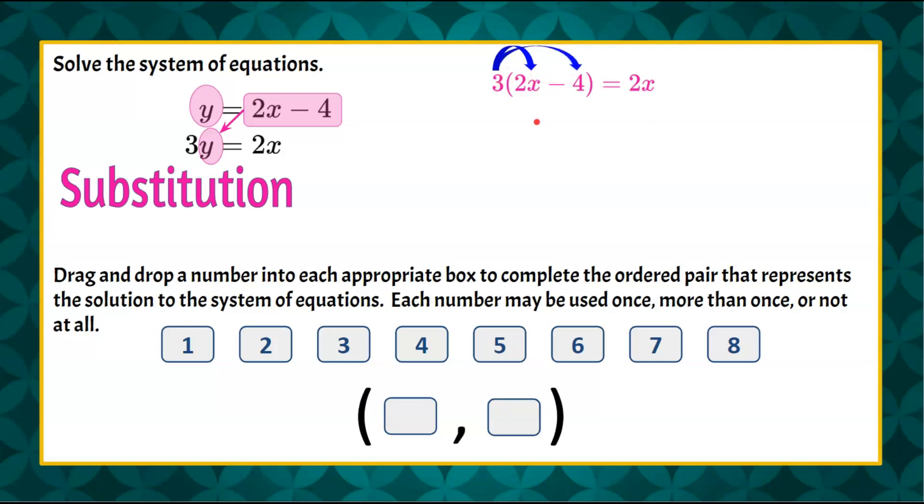The first thing we're going to do is to simplify the left side by distributing. 3 times 2x is 6x, and 3 times negative 4 is negative 12, and that's going to equal 2x.